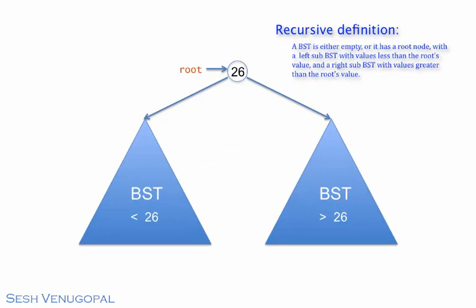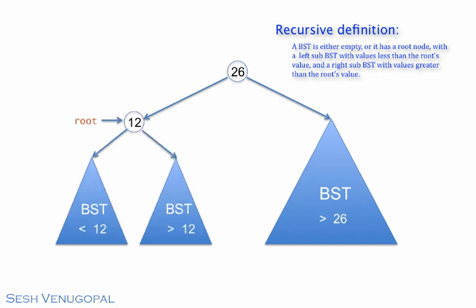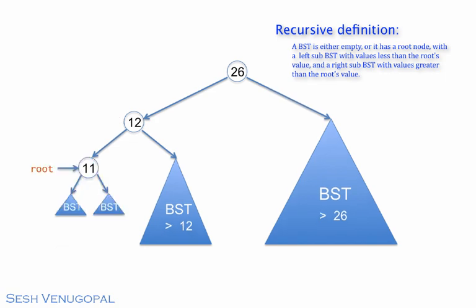At the top level, it's a root 26 and its left and right subtrees, which are also BSTs. Applying the recursion to the left subtree gives us a root 12 with left and right sub BSTs. Applying the recursion to the left sub BST of 12 gives 11 for the root with left and right sub BSTs again.